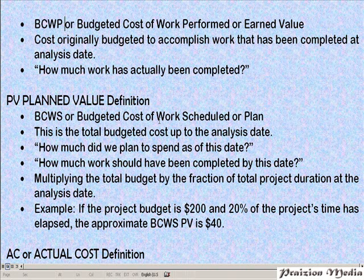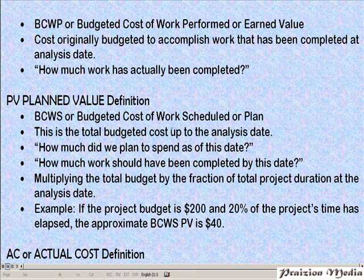Planned Value is calculated by multiplying the total budget by the fraction of the total project duration at the analysis date. For example, if the project budget is $200, and 20% of the project's time has elapsed, the approximate budgeted cost of work scheduled will be 200 times 20%, which gives you $40.